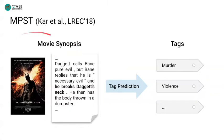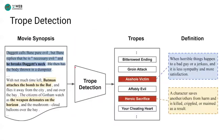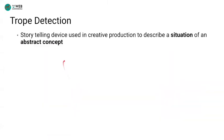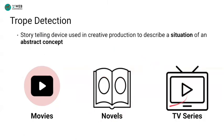There is a recent work on LREC18 which uses movie synopses and trains the model to predict associated tags. As shown here, a model might utilize certain keywords to predict the tags instead of comprehending the story. On the other hand, our trope detection task moves a step further by leveraging more abstract tropes beyond actions, objects, events, or relations. Tropes are storytelling devices frequently used in creative productions such as movies, novels, and TV series, to describe situations that storytellers can reasonably assume the audience will recognize.